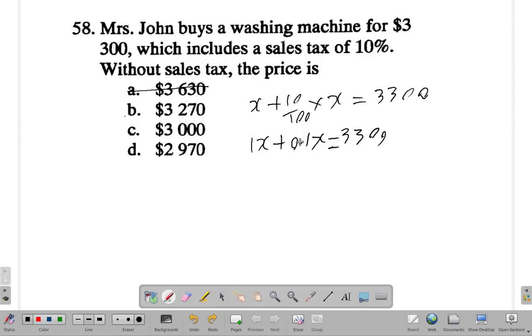So here, divide both sides by 1.1. Divided by 1.1 is 3300 over 1.1.